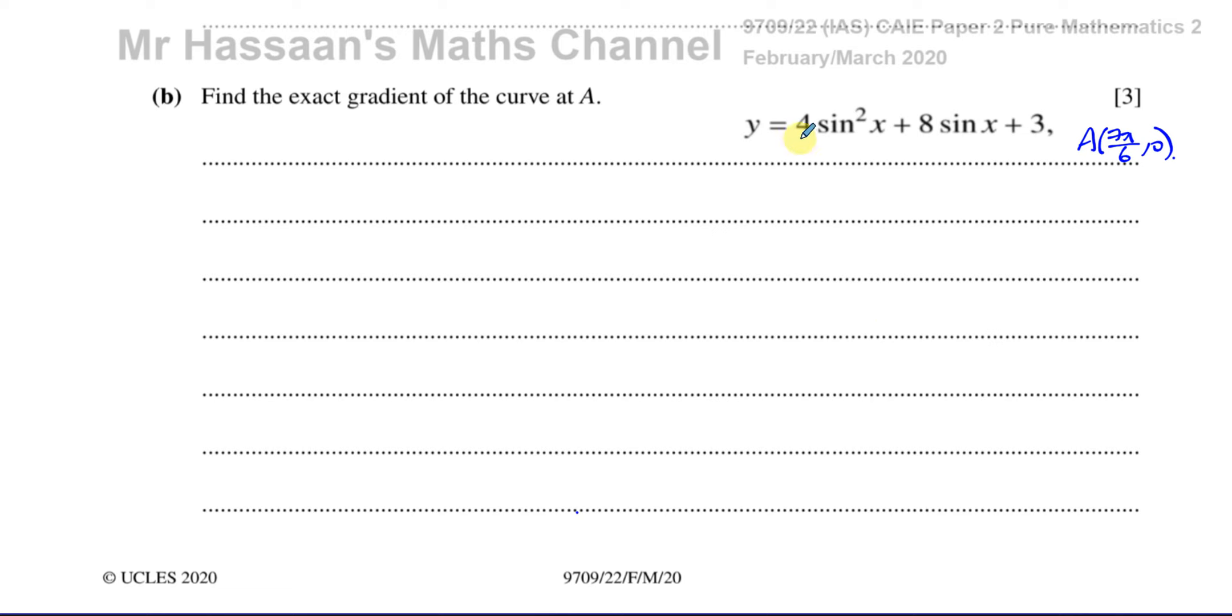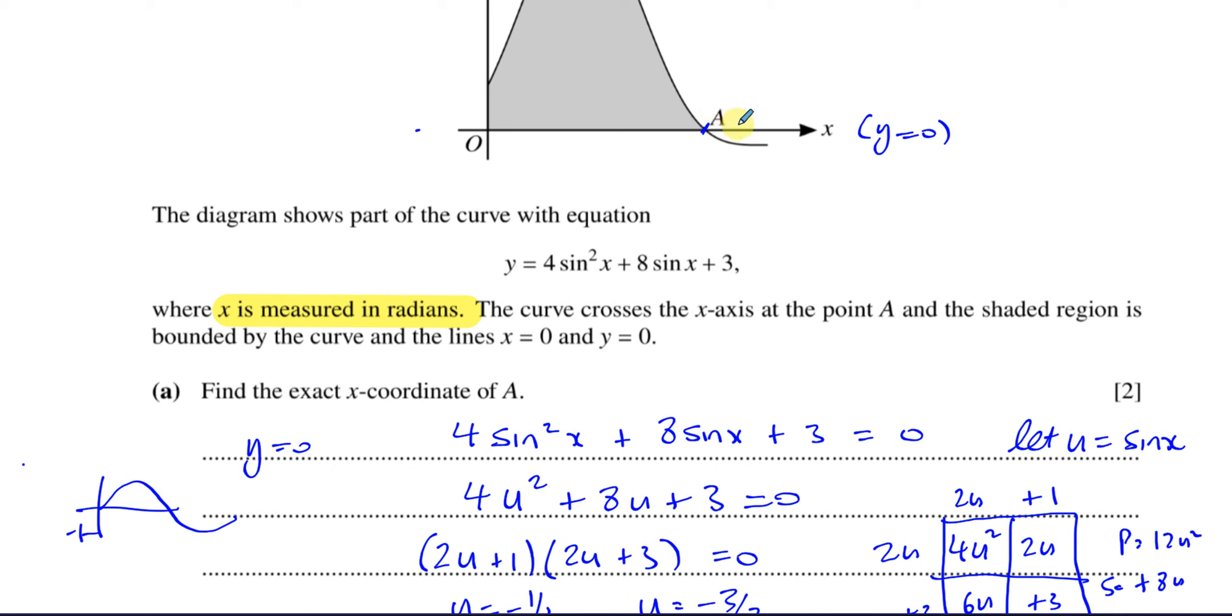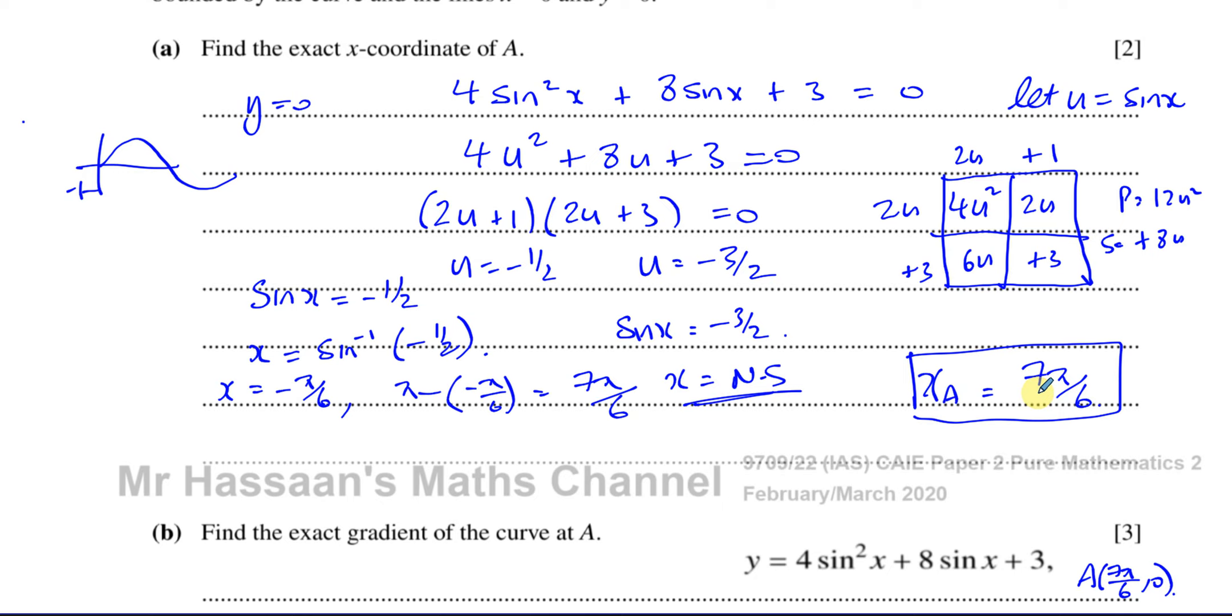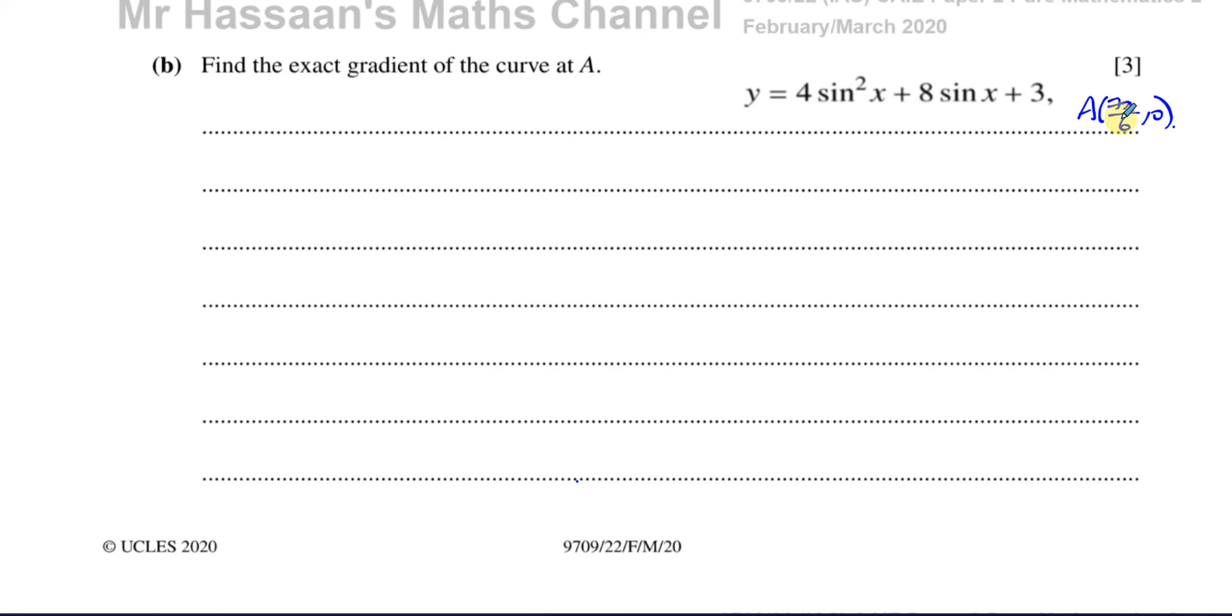So here we have y equals 4 sine squared x plus 8 sine x plus 3. We have to find the exact gradient of the curve at A. If we look at part A, A is a point where the graph cuts the x-axis, and we had to find the x-coordinate of A, which we did. So we're going to take that x-coordinate of A and find the gradient of the curve at A, but the gradient has to be found by using the gradient function, which is found by differentiating y with respect to x.